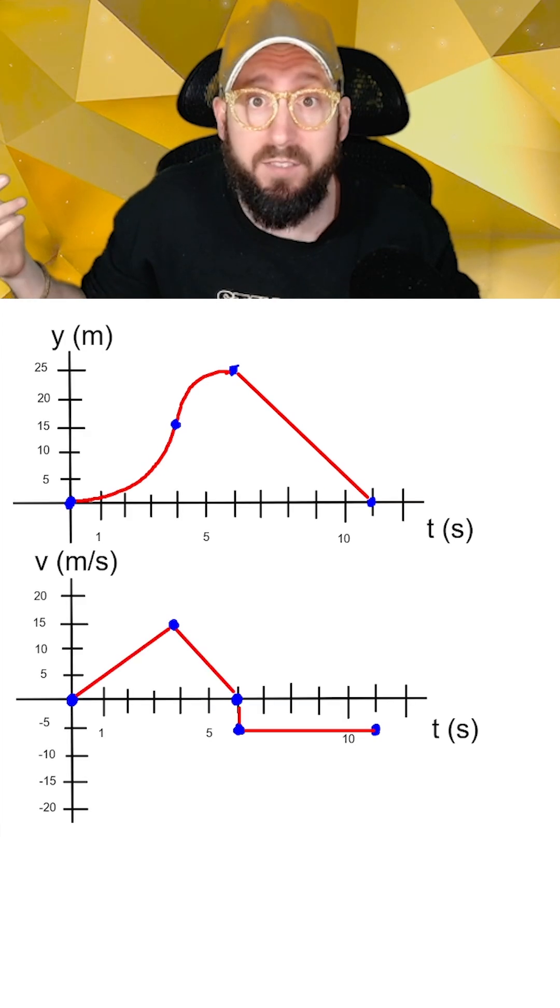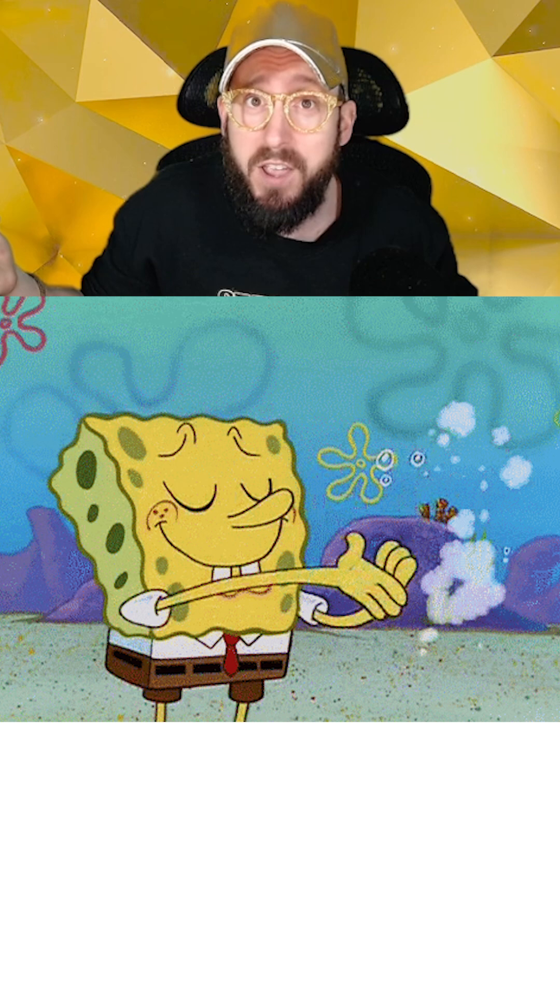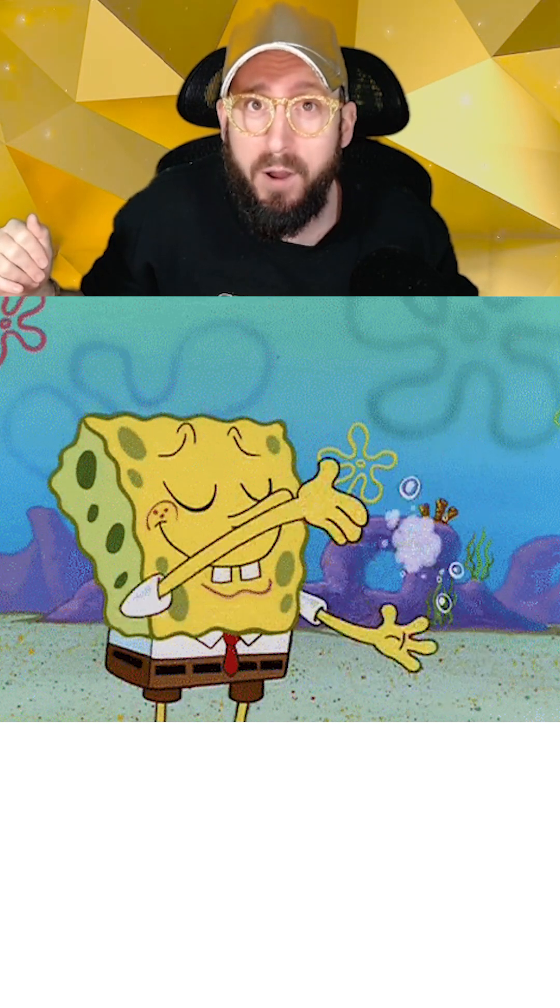Now all that's left to do is to connect the critical time points on our velocity graph with straight lines and you're done. And there you have it. That's how to draw velocity versus time graphs from position versus time graphs. Nice!